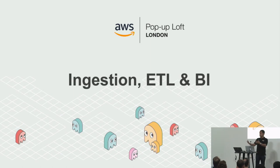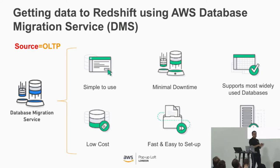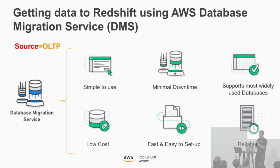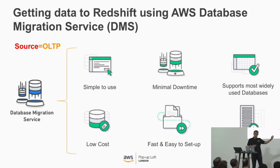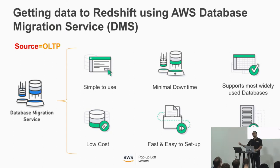The other element of a data warehouse is ingestion, ETL, and BI. If your existing data is in a relational database, then DMS — Amazon Database Migration Service — is the tool of choice. It's simple to use with minimal downtime, you can run in multiple AZs, it supports most widely used source databases, it's low-cost, fast and easy to set up, and reliable. You can do a one-off load or change data capture. The source database could be on-premises, on AWS, on RDS — anywhere. It supports Oracle, MySQL, SQL Server, and a whole list more.